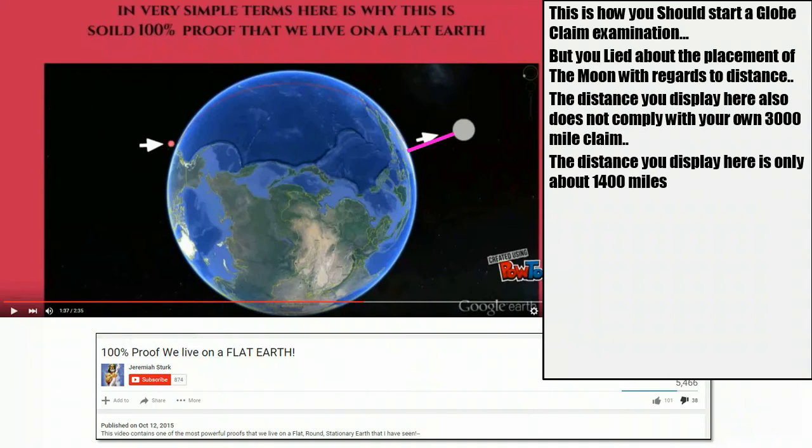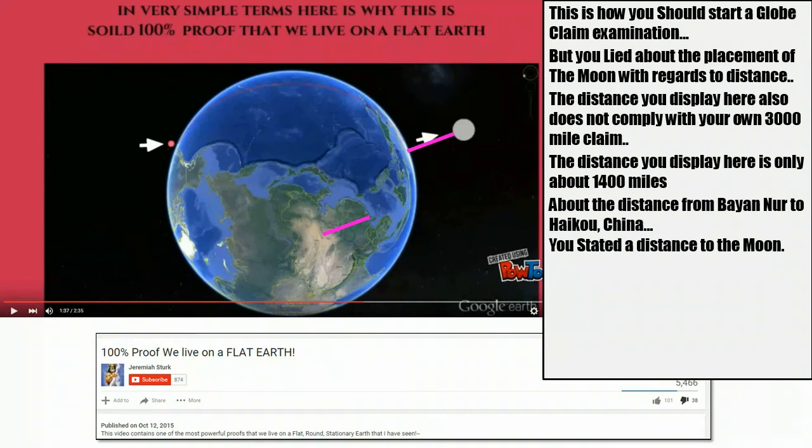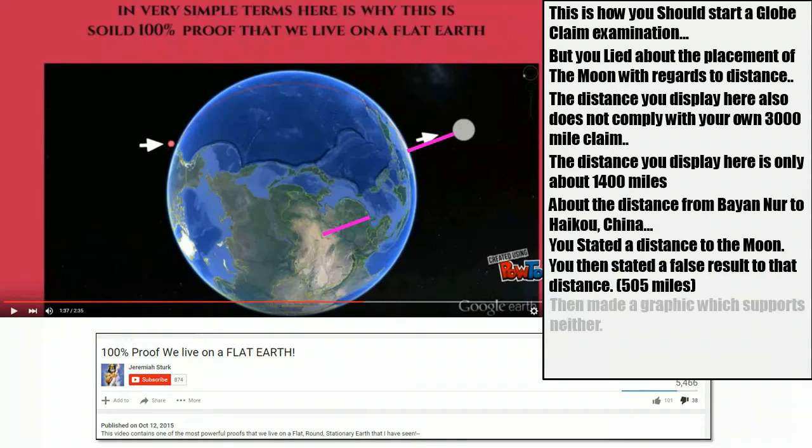Which, if I move the line over, is about the distance from Banyan Nur to Haiku, China. You stated the distance to the moon, then you stated the false result to that distance, and then made a graphic that supports neither of them. That makes this a deliberate deception, therefore it is... what other word would you use for it? I know you want to say, oh, it was a mistake. No. This is a lie, man.